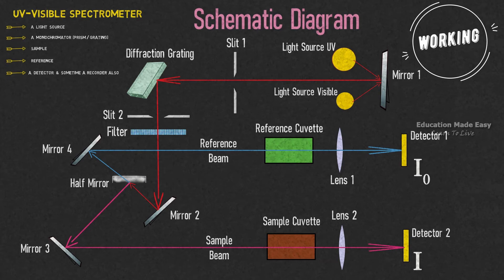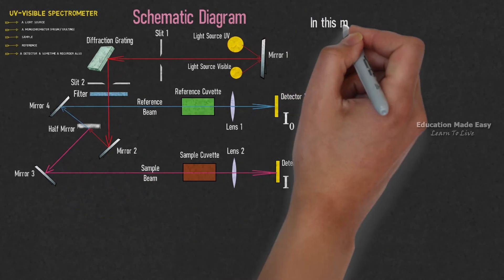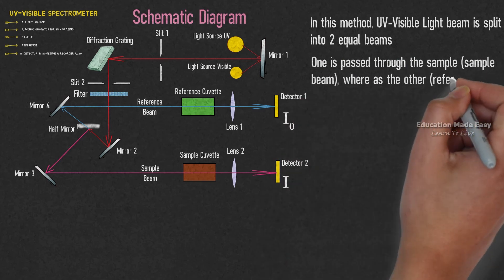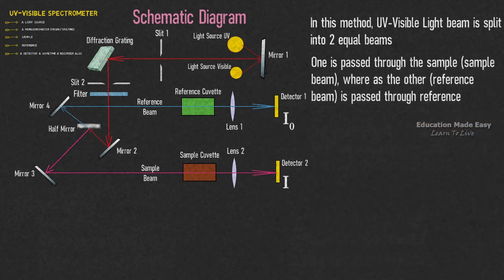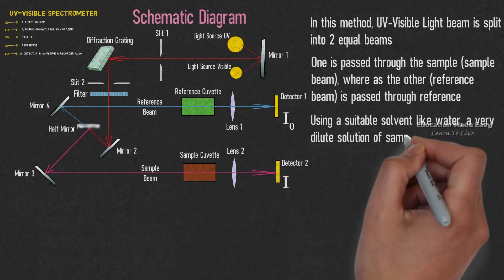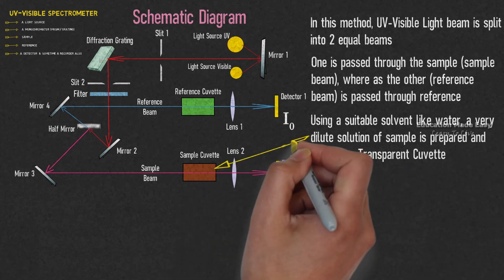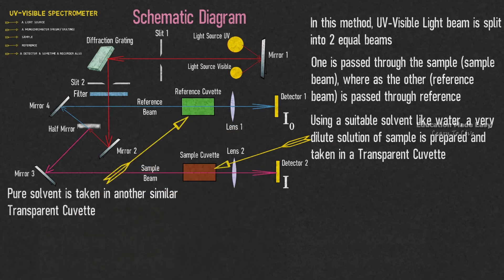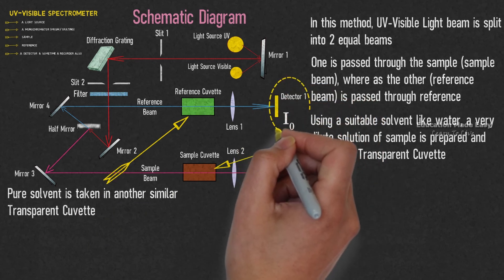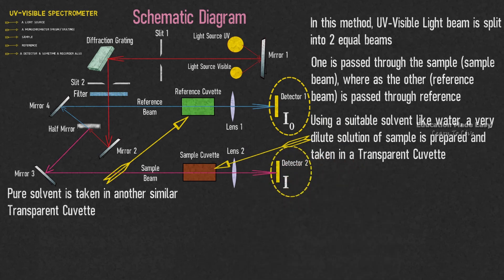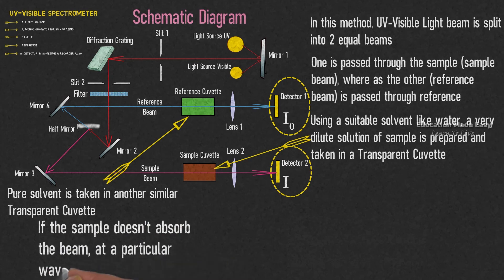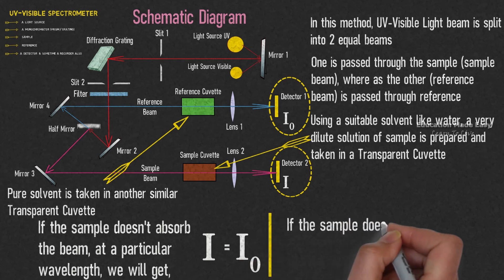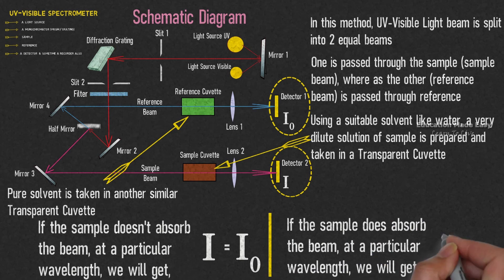The intensity of the reference beam and sample beam is compared to understand the sample. In this method, UV visible light is split into two equal beams — one is passed through the sample, called the sample beam, whereas the other, the reference beam, is passed through the reference cuvette. Using a suitable solvent like water, a very dilute solution of sample is prepared and taken in a transparent cuvette, represented in the figure as a brown box. Pure solvent is taken in another similar transparent cuvette, represented as a green box. The intensity of light at detector 1 (I0) and intensity of light at detector 2 (I) is compared. If the sample doesn't absorb the beam at a particular wavelength, we get I equal to I0. If the sample does absorb the beam at a particular wavelength, we get I less than I0.